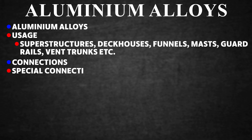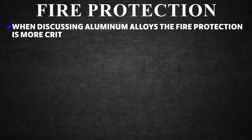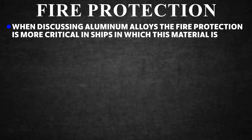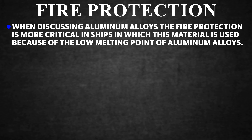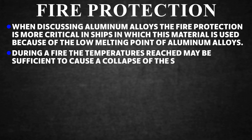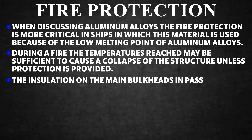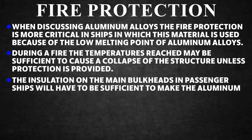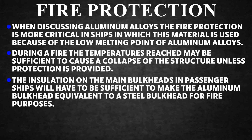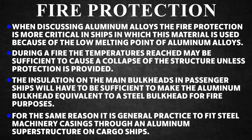Fire Protection — Aluminium. Fire protection is more critical in ships using aluminium alloys because of their low melting point. During a fire, temperatures may be sufficient to cause structural collapse unless protection is provided. Insulation on main bulkheads in passenger ships must make the aluminium bulkhead equivalent to a steel bulkhead for fire purposes. For this reason, it is general practice to fit steel machinery casings through an aluminium superstructure on cargo ships.